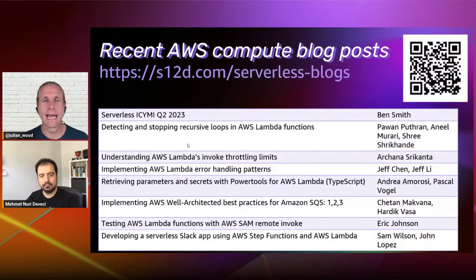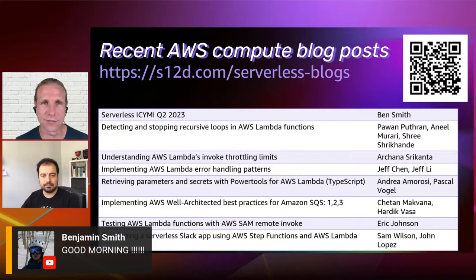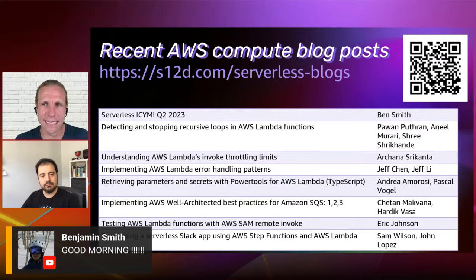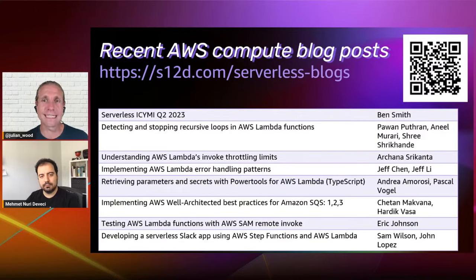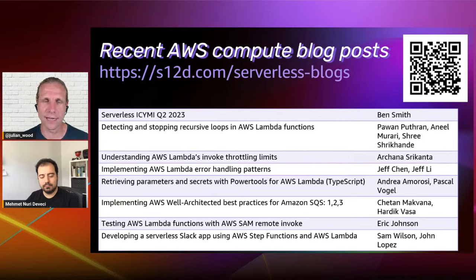Ben Smith has written a really good 'in case you missed it' for Q2 2023 — literally everything in serverless that came out in Q2 2023. Something released yesterday, which Pawan, Anil, and Sri wrote about, is detecting and stopping recursive loops in Lambda functions. If you're using SNS or SQS, Lambda will automatically stop those recursive loops after 16 iterations, saving you money and head-scratching. And there's a post from Arshan on Lambda throttling limits, plus a post from Jeff Chen and Jeff Lee on error handling patterns covering DLQs and Lambda destinations.